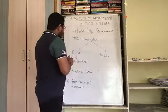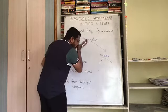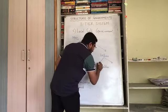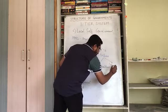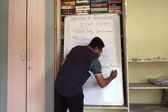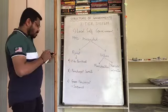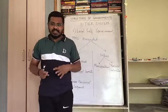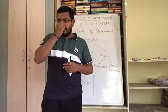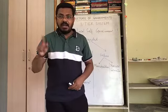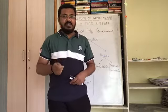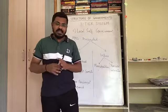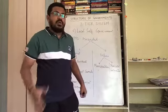In urban areas, there are two types of local self-government bodies: Municipalities and Municipal Corporations. Municipalities and Municipal Corporations are present in towns and cities. For example, Rajkot has RMC — Rajkot Municipal Corporation — and Ahmedabad has AMC — Ahmedabad Municipal Corporation. Cities have Municipal Corporations while towns have Municipalities.